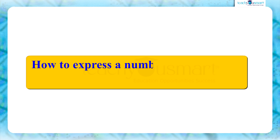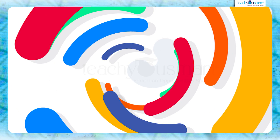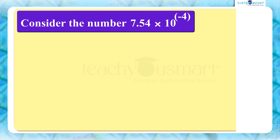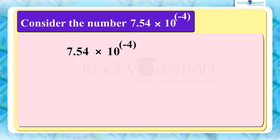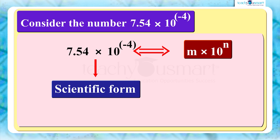Now we are going to discuss how to express a number in usual form if the power of 10 is a negative value. We will work with a number in the form m multiplied by 10 raised to n, where m equals 7.54 and n equals minus 4.